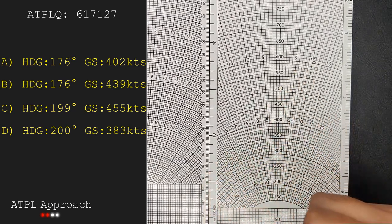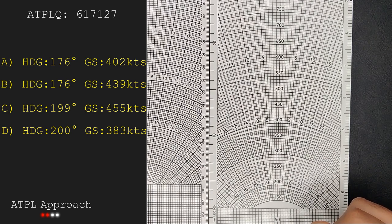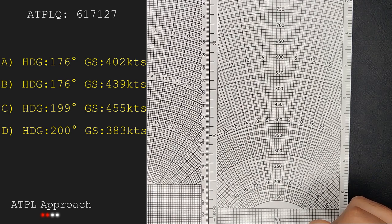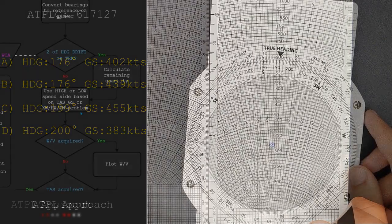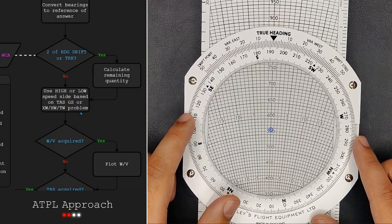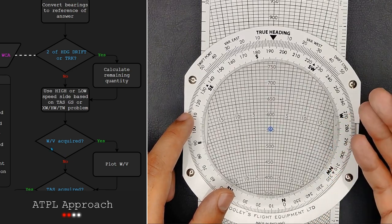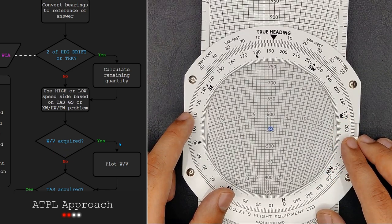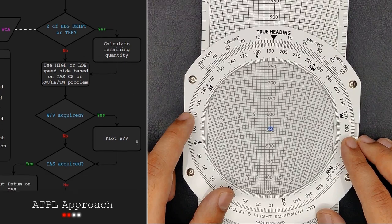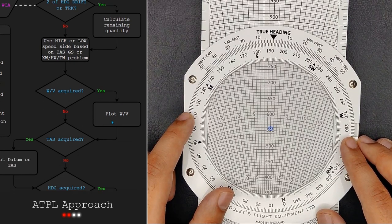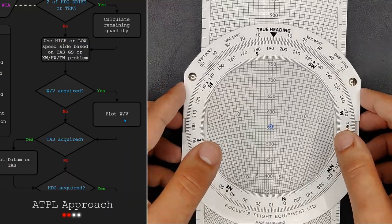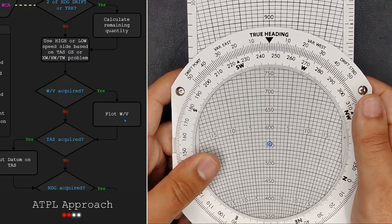Taking a look at our answers, we are very lucky because they are all very distinguishable from each other with ground speeds far apart. Okay, now like I said in my last video, we always plot the wind first if it is given. This is the same as before, so we face the wind by putting the direction of 260 degrees underneath it.